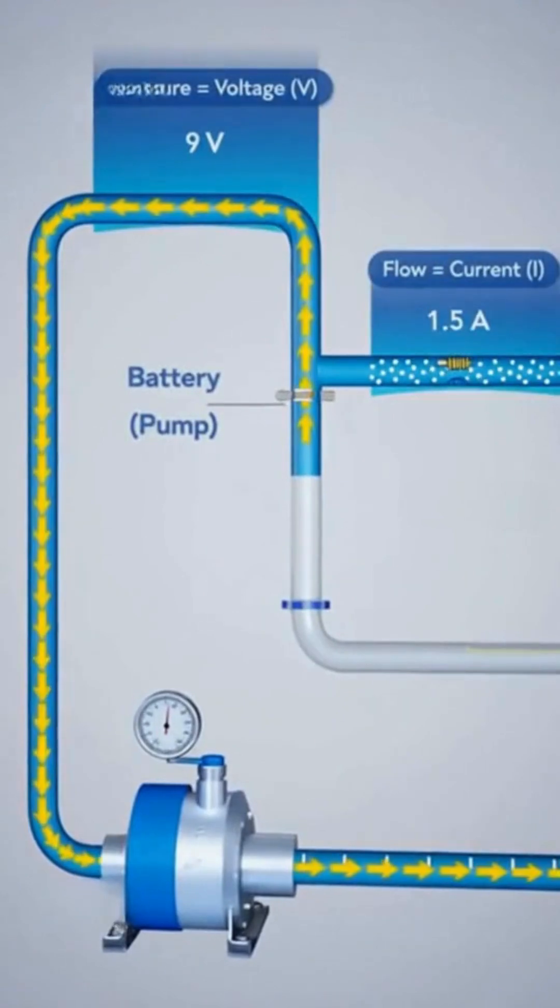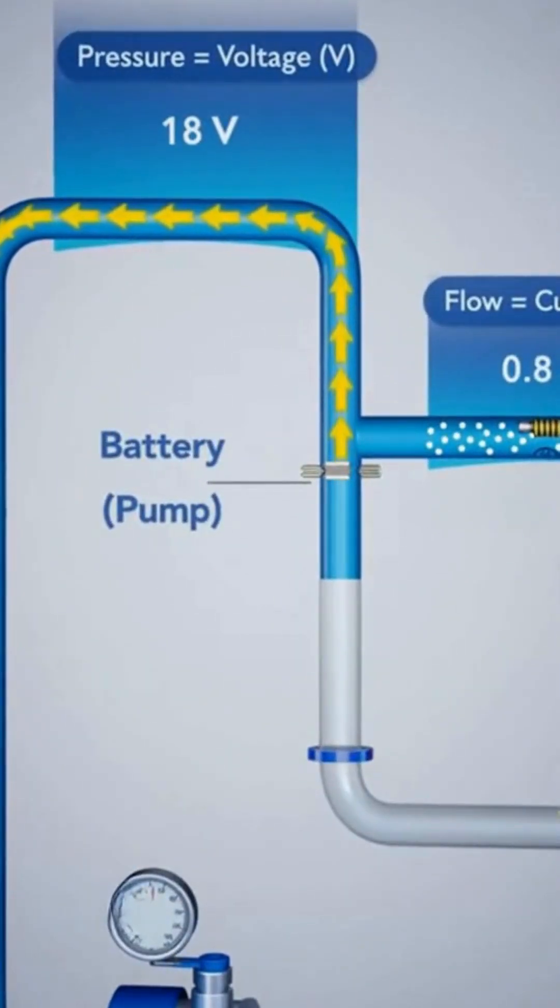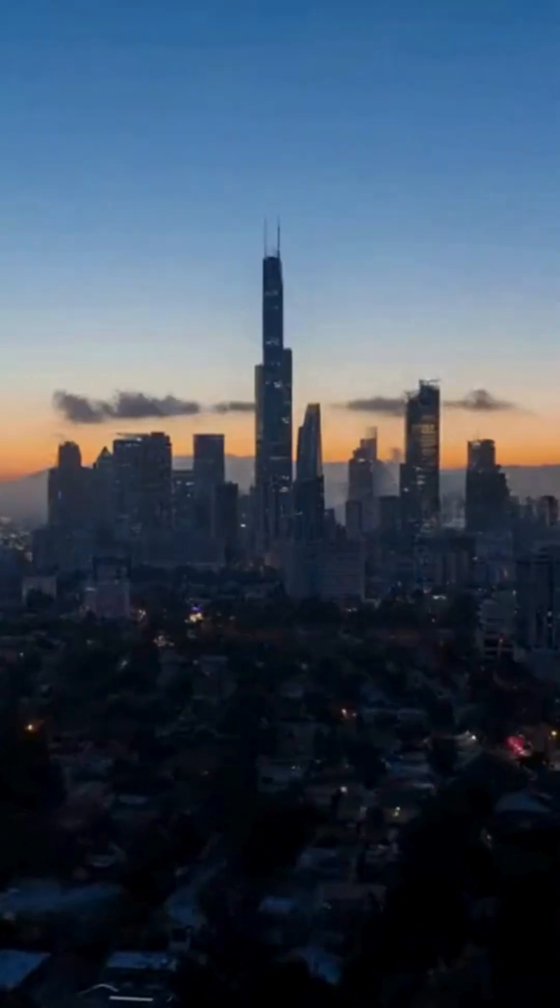Think of a battery like a pump. It creates pressure in the water pipe, just as a battery creates voltage in a wire. The higher the pressure, the higher the voltage. The moving water is the current. If we tighten this valve, the resistance increases.